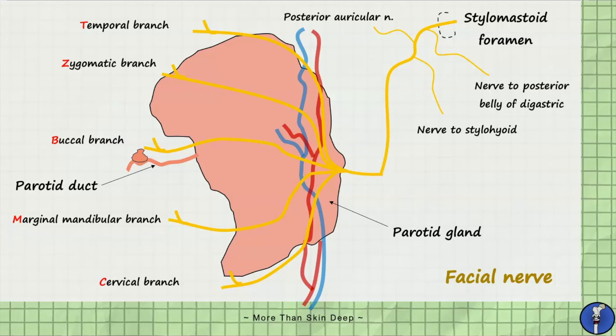Whilst the facial nerve passes through the parotid gland, it's really important to remember that the facial nerve does not provide intrinsic innervation to the parotid gland. Instead, sensory innervation to the gland and overlying fascia is provided by the auriculotemporal nerve and greater auricular nerve. Secretomotor fibres are supplied by parasympathetic nerve fibres which increase saliva production. Preganglionic parasympathetic fibres begin with the glossopharyngeal nerve and synapse at the otic ganglion, after which postganglionic fibres travel alongside the auriculotemporal nerve to reach the parotid gland.